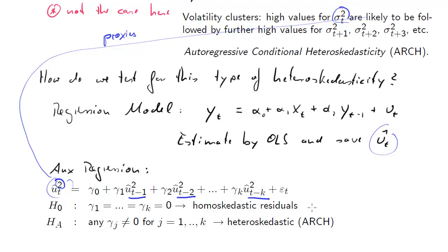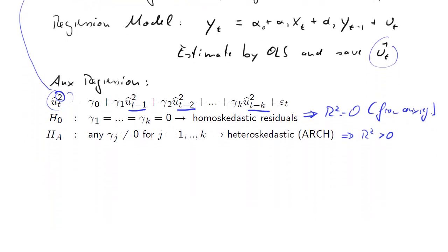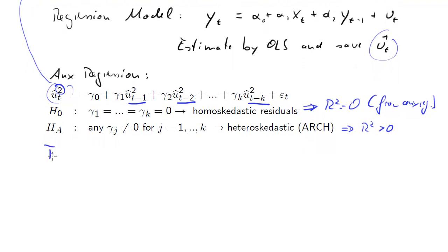How many lags to include? That's an empirical question. If you have monthly data, you may want to include up to 12 lags. The null hypothesis is that all of these lagged terms are irrelevant and therefore R squared equals zero — the variance is constant and lag variances shouldn't matter. The alternative is that one of these coefficients is unequal to zero, which would imply R squared is larger than zero, meaning the variation in Ui hat squared can partially be explained by the lagged explanatory variables. The test statistic is n times R squared, asymptotically chi-squared distributed with k degrees of freedom.